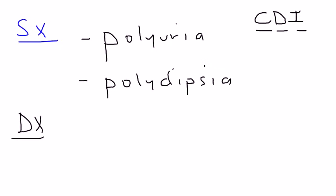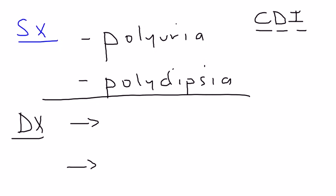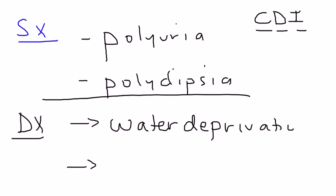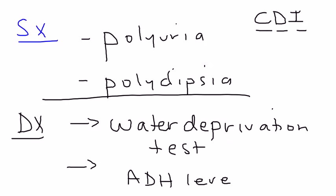How do you diagnose CDI? There are two main diagnostic tests. First, there's a water deprivation test: in a controlled environment, you deprive the patient of water for a few hours and take measurements of their urine and plasma osmolarity. Second, you can measure the ADH levels directly. Although this second test is not usually done because the water deprivation test is so accurate and conclusive.